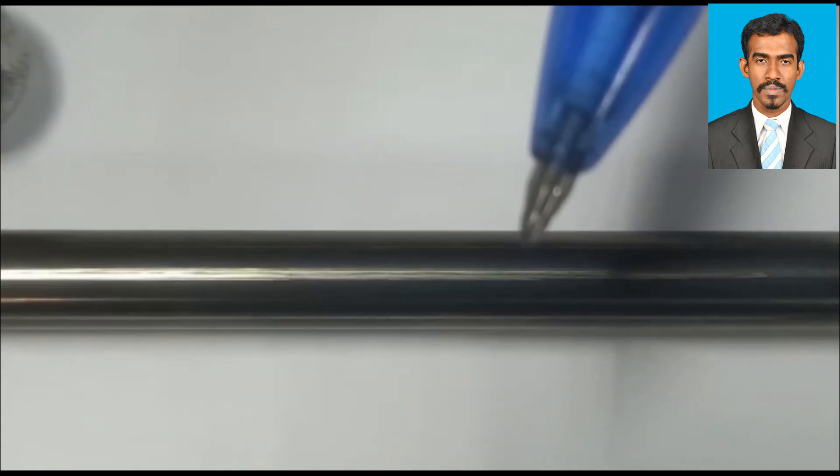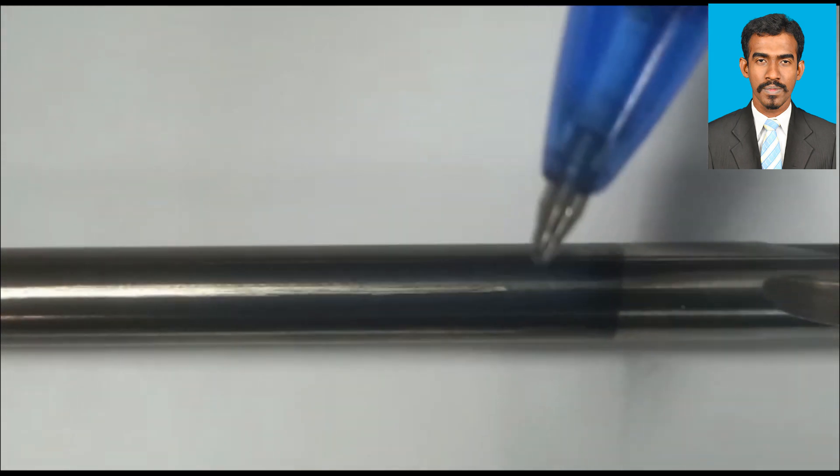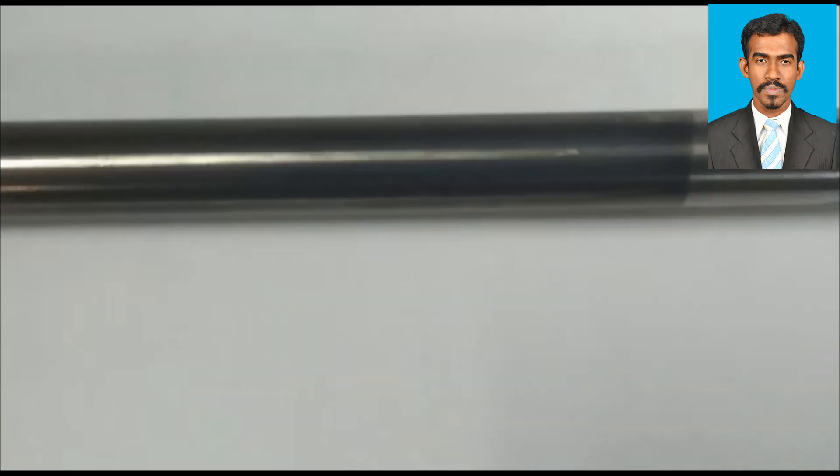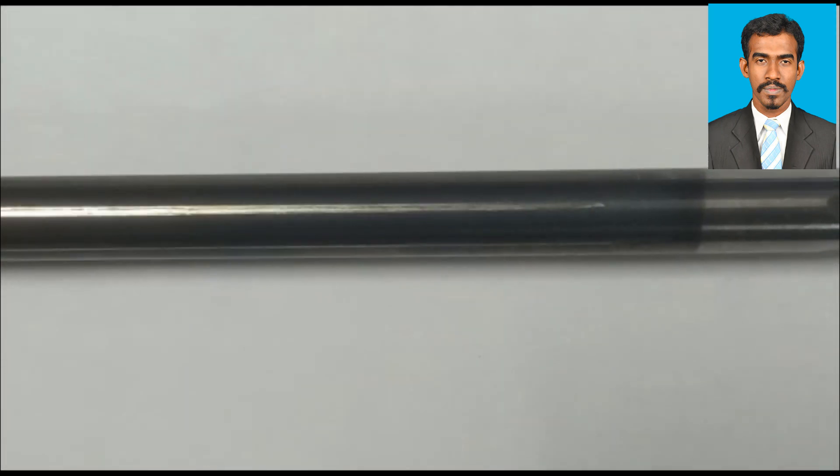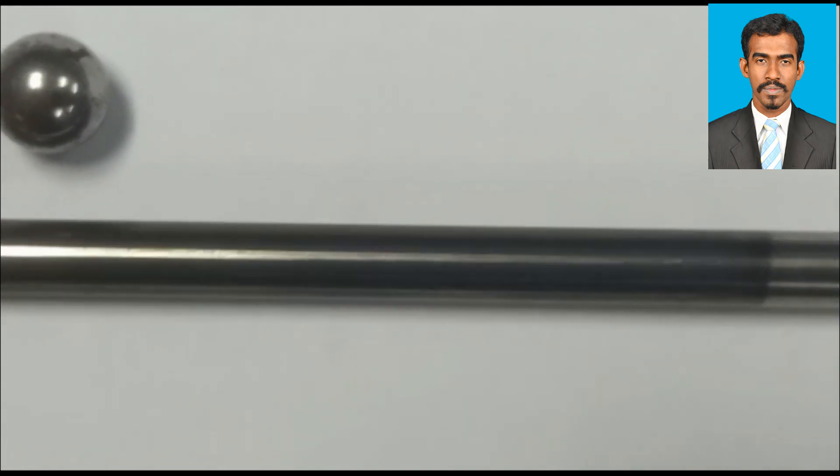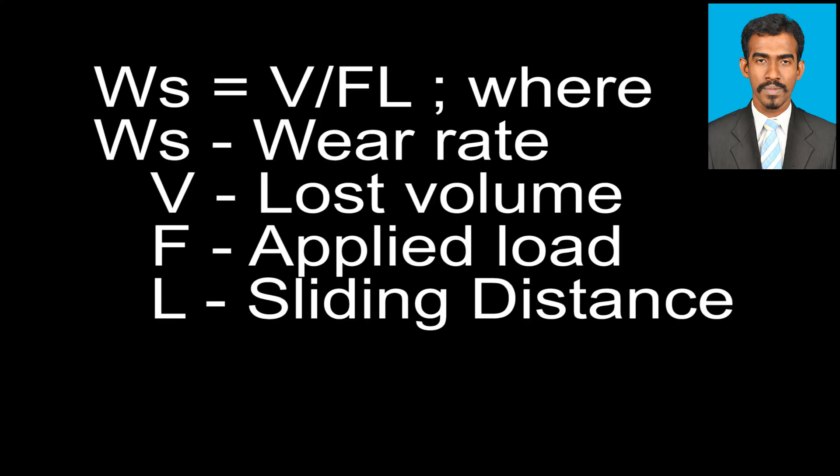In order to calculate either the wear volume or wear loss by weight, we'll usually measure before and after the experiment the weight of the ball and the specimen. By that, we can calculate the wear loss. If you want to calculate the wear volume loss, we need to use the IFM Infinite Focus Microscope. There we can get the image of the volume loss, and then we can calculate it by the formula.